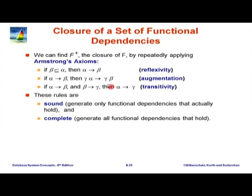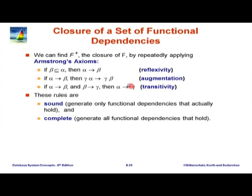It is fairly clear these rules are sound. Augmentation is easy to see: given any relation state, if you have two tuples with the same value for gamma alpha, they obviously have the same value for alpha, which means they must have the same value of beta. They already have the same value of gamma, and now we are also saying they have the same value of beta. So whenever two tuples have the same gamma alpha, they have the same gamma beta — that verbally proves augmentation is correct.